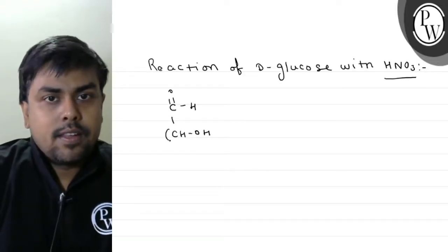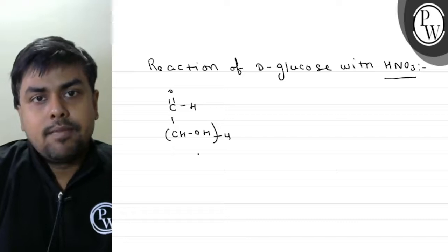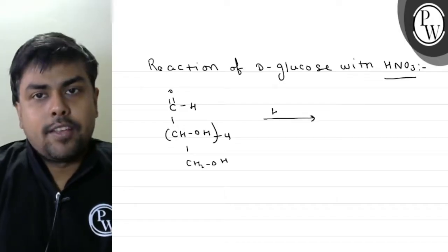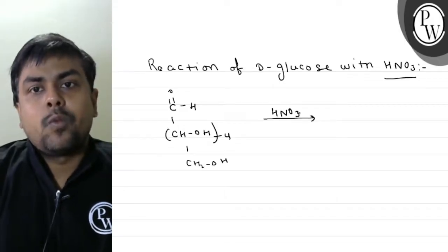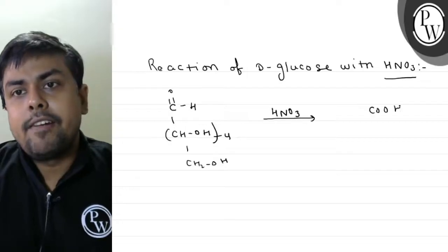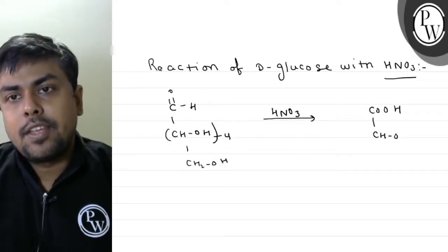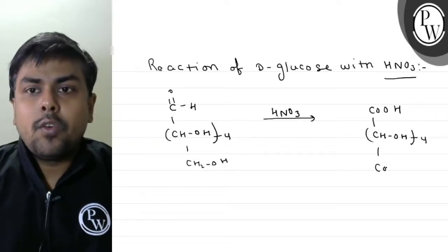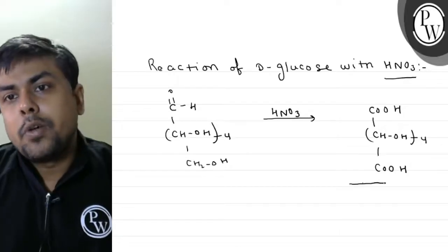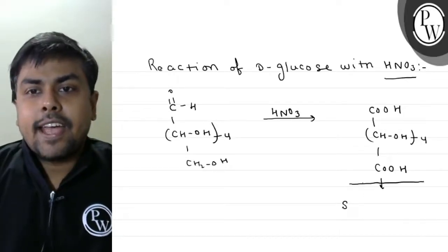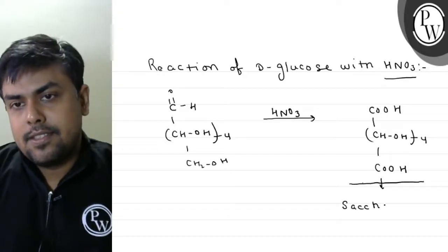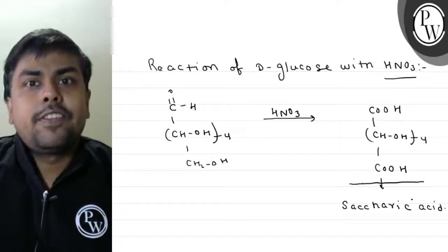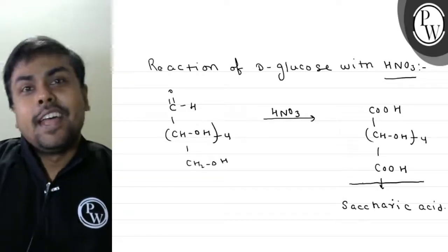CHOH 4 times, CH2OH. If we treat with HNO3, then what I will get? The aldehyde will get converted to acid. I will have COOH, CHOH 4 times, and then COOH. This particular acid we call Saccharic Acid. So this is the reaction of D-glucose with HNO3.